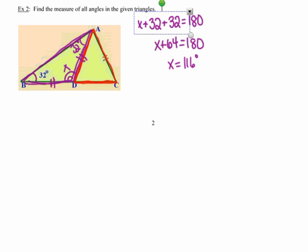If X is 116, then this green base angle over here must be the supplement to 116, or in other words, 64. And if one base angle measures 64 in that red triangle, the other base angle must measure 64 as well.